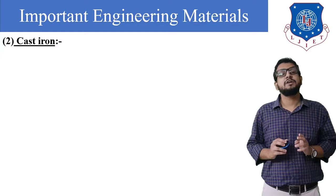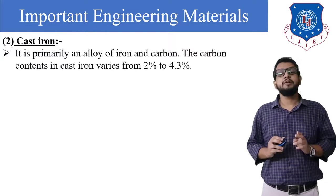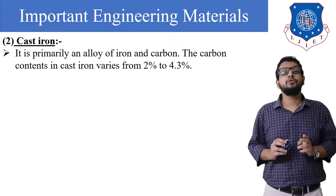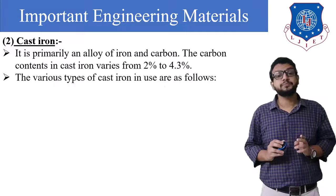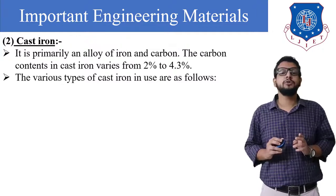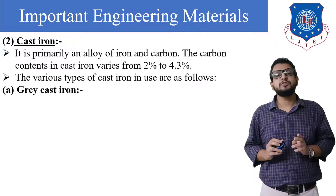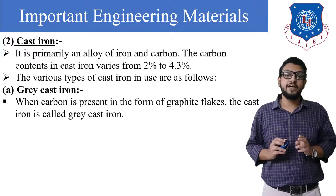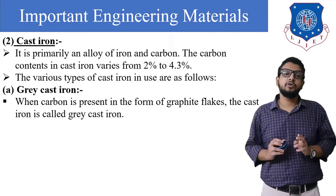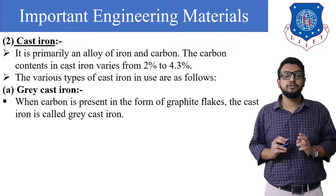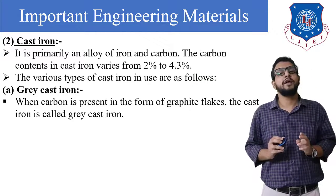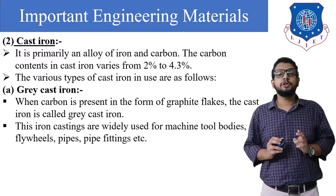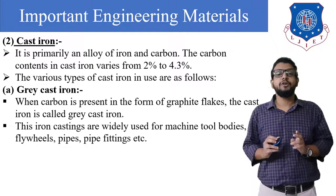The next type is cast iron. It is primarily an alloy of iron and carbon. The carbon content in cast iron varies from 2 to 4.3%. The first type is gray cast iron — when carbon is present in the form of graphite flakes, the cast iron is called gray cast iron. These iron castings are widely used for machine tool bodies, flywheels, pipes, and pipe fittings.